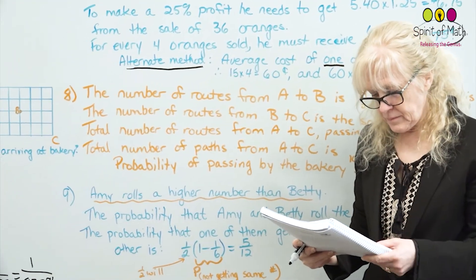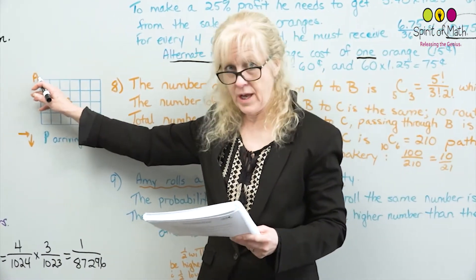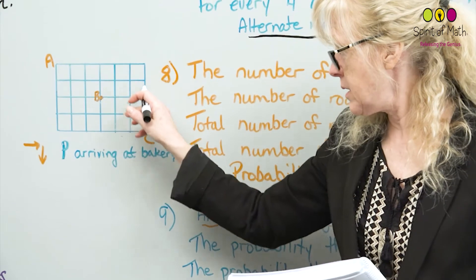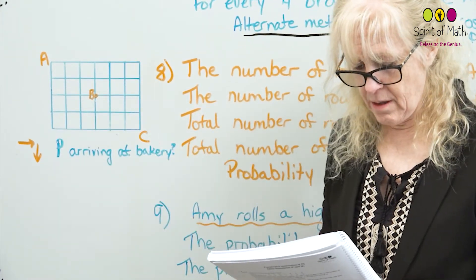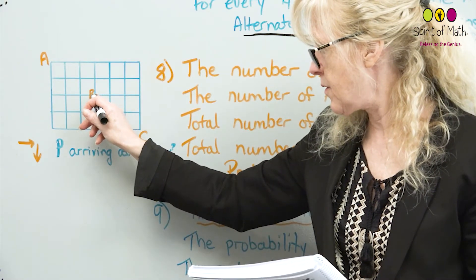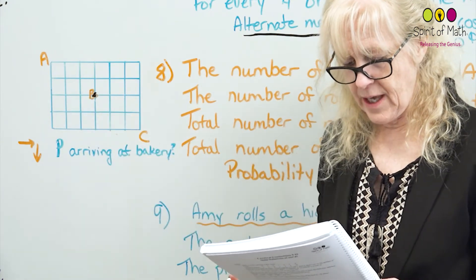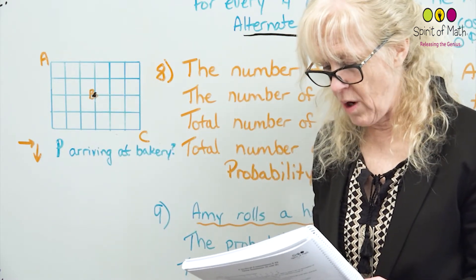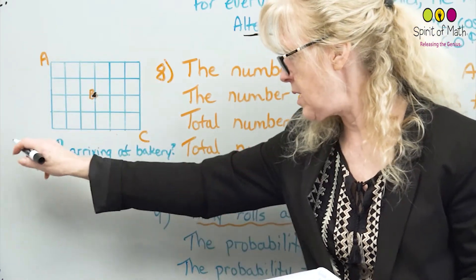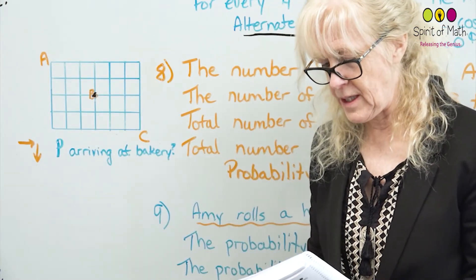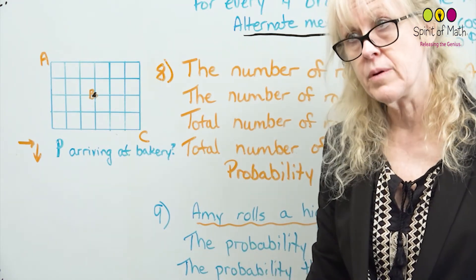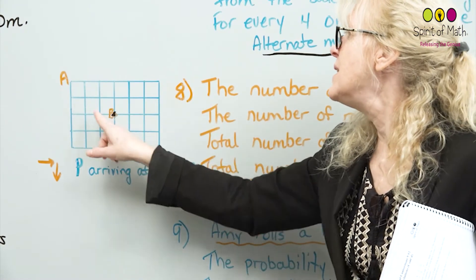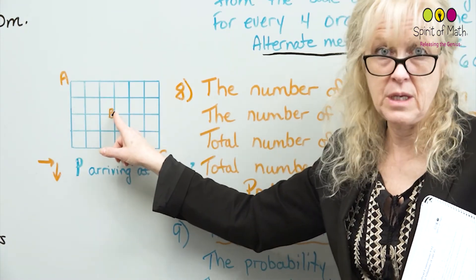Question eight: Adolphus at corner A is walking to Carrie's place at corner C, and he will stop at the bakery at corner B if he happens to pass it. If Adolphus always walks east or south, what is the probability that he will arrive at the bakery during his trip? You want to know how many pathways there are in total, and then what's the probability that a pathway will go through point B.